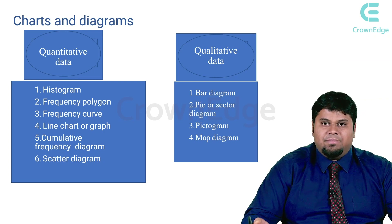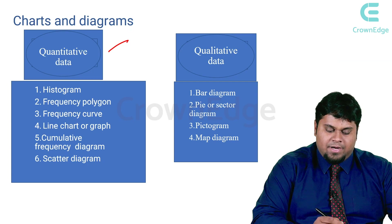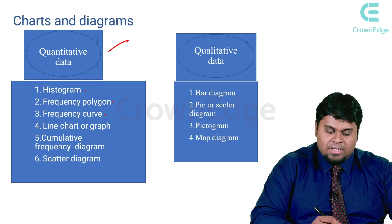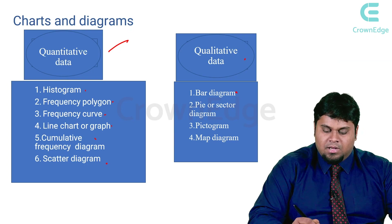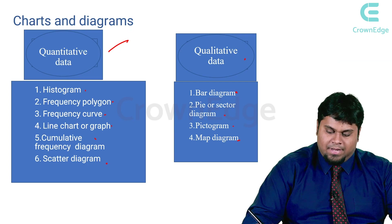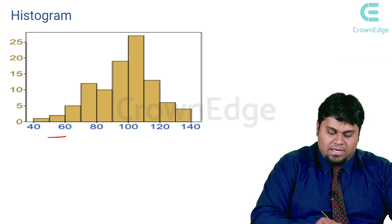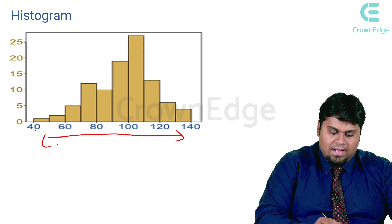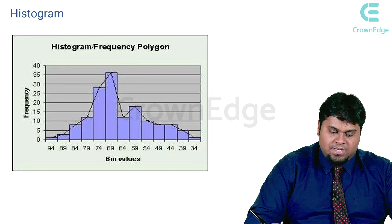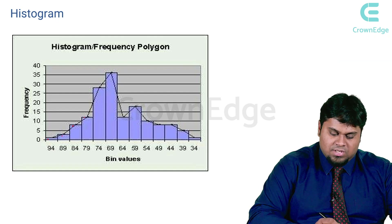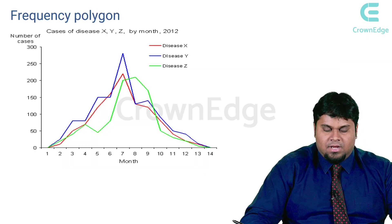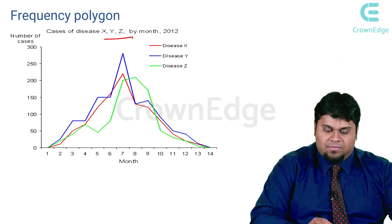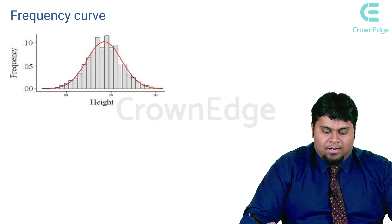When it comes to charts and diagrams, quantitative data can be depicted using a histogram, frequency polygon, frequency curve, line chart, cumulative frequency diagram, or scatter diagram. Qualitative data can be depicted using a bar diagram, pie chart, pictogram, or map diagram. In a histogram, intervals are created and the corresponding frequencies are plotted. In a frequency polygon, the center points of the histogram bars are joined to form a continuous line showing frequency versus values on the x-axis.